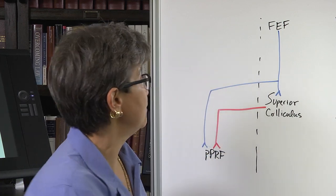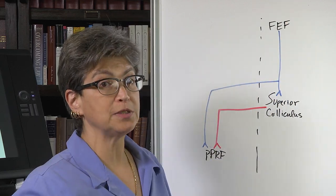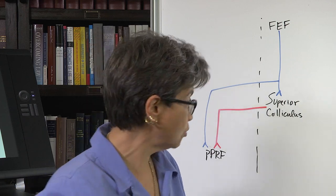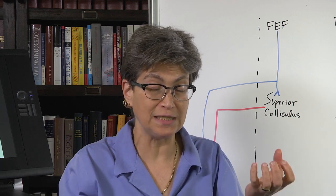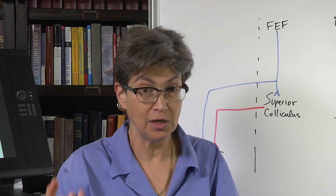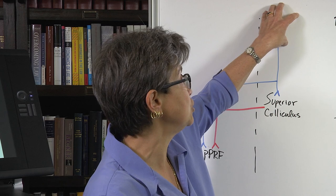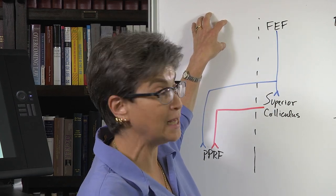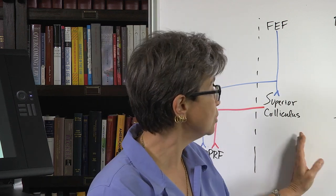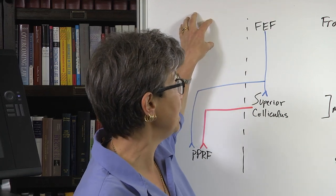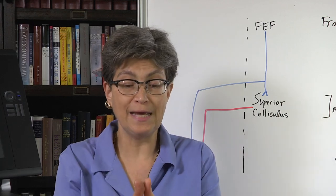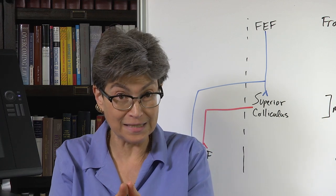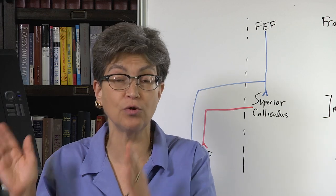If the frontal eye fields are lesioned — as can happen with a middle cerebral artery stroke — you will no longer be able to look to the contralateral side. Resting gaze is a balance between the resting activity in the two sides of the frontal eye fields. If one side is lesioned, the healthy side takes over. So if the right frontal eye fields are lesioned, the healthy left frontal eye fields will drive gaze to the right, meaning resting gaze will be deviated toward the affected side — toward the side with the lesion.